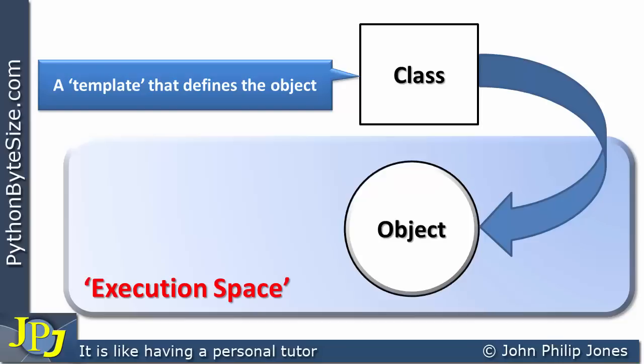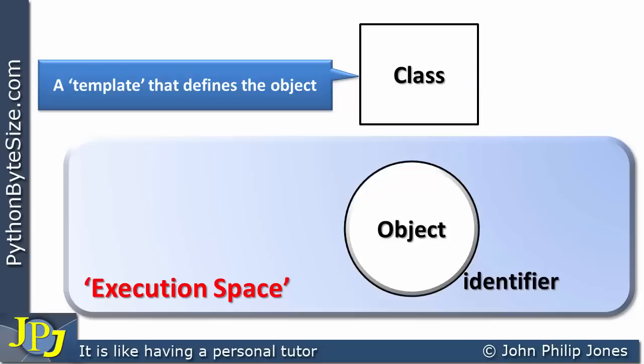Every object in the execution space is named — every object has its own identifier. Within the execution space there could be a number of objects, and they all have their own unique identifier. Once the object is in the execution space, we can remove the relationship arrow from the diagram, because what we really now have is a concentration on what the object will do for us.